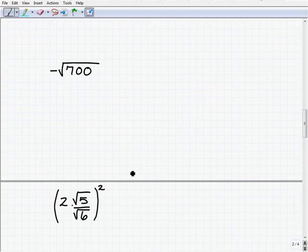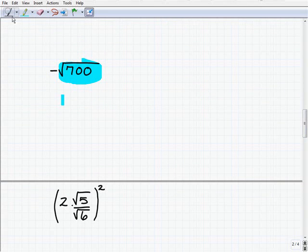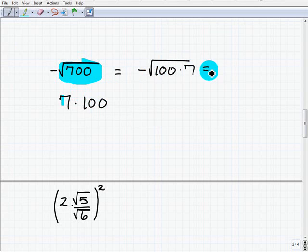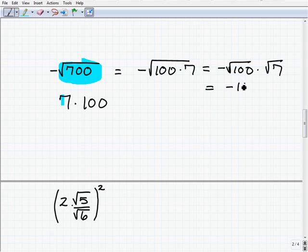Alright, negative square root of 700. Now this might be daunting, but hopefully, we're looking for a perfect square. You recognize that 7 times 100 is a nice perfect square. So let's write this as negative square root of 100 times 7. So now I'm going to have, you just have to be careful with this negative sign. It's going to be negative square root of 100 times the square root of 7. So this is going to be negative 10 times the square root of 7.